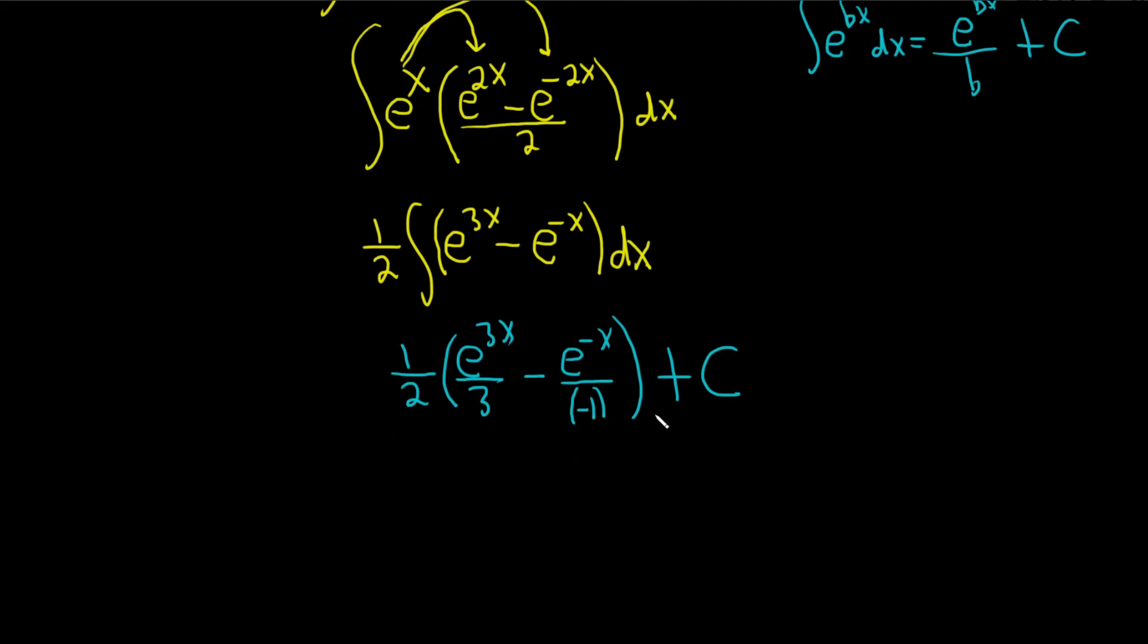Okay, so I guess now we can just distribute the one-half. So one-half times one-third, this will be one-sixth. E to the 3x plus, right, this negative and negative is positive, one-half e to the negative x plus our constant of integration, capital C.